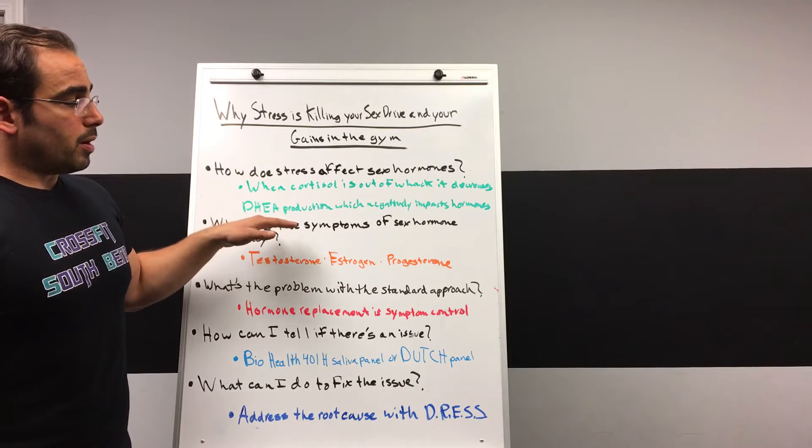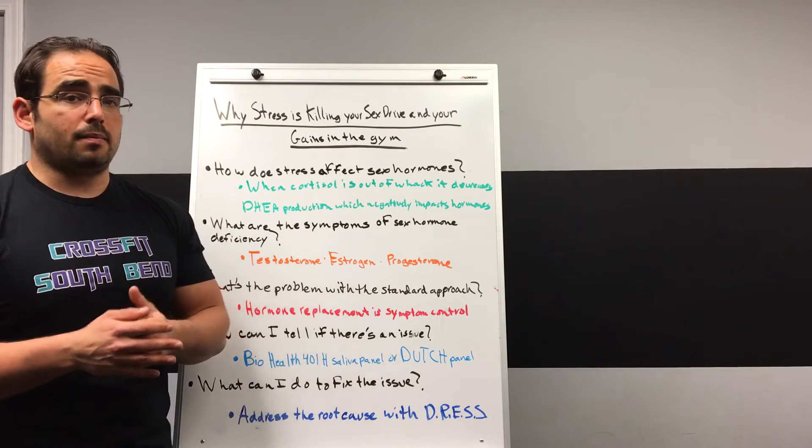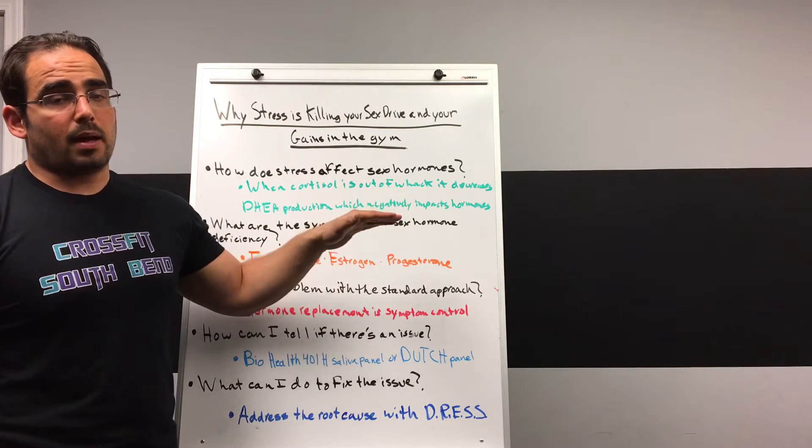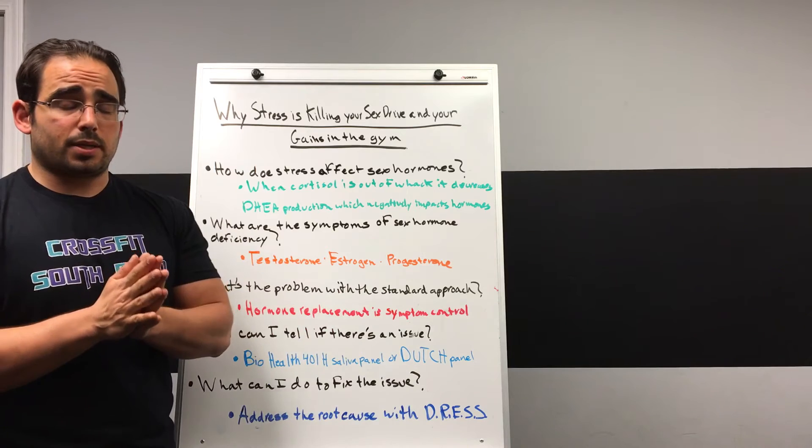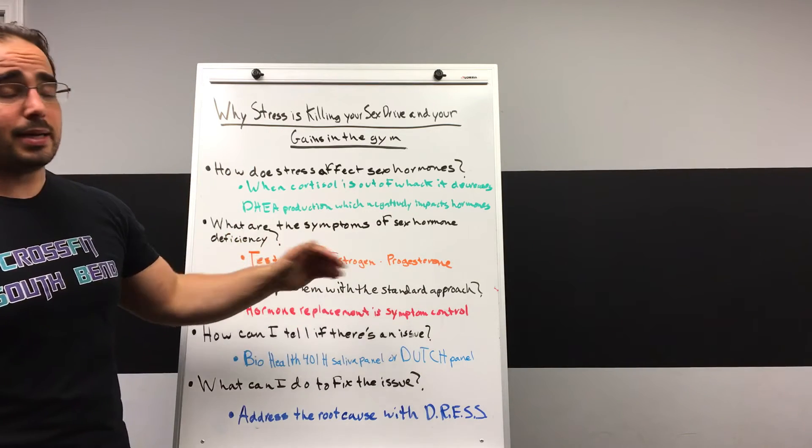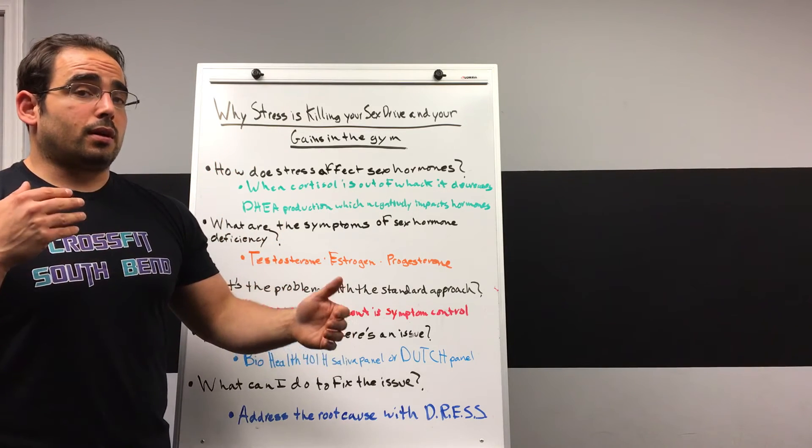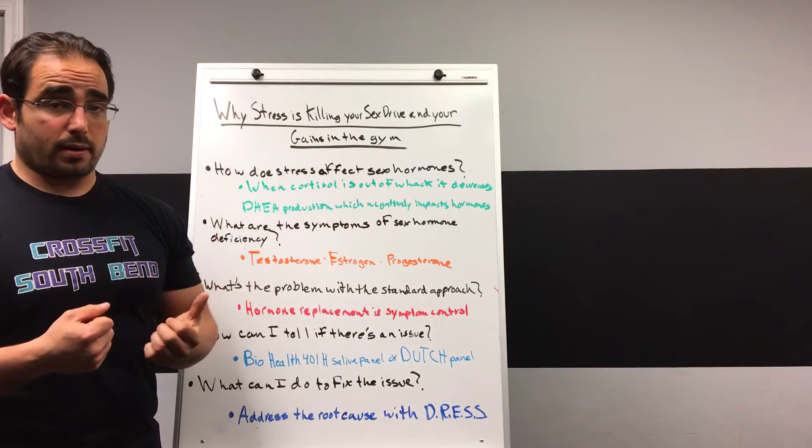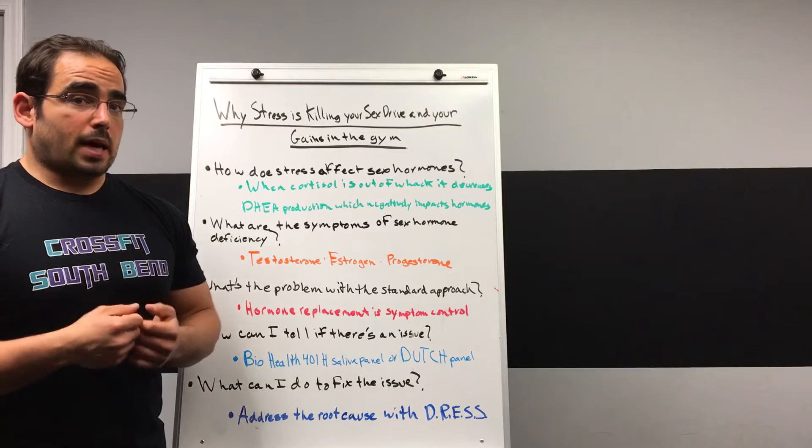The mechanism for testosterone and estrogen being low is typically lowered DHEA production. It could be other things, many other things, but the main one that we're concerned with is lowered DHEA production. Progesterone is actually in a different pathway, but that can be low too. And a lot of the symptoms that you would have with low estrogen, like the ones I just mentioned, the hot flashes and night sweats, can be mimicked with a progesterone deficiency. Another thing to keep in mind is that, especially in women, a lot of what matters is the progesterone to estrogen ratio. If those two numbers, progesterone and estrogen, aren't in the right ratio with one another, then that can also mimic symptoms of low estrogen or low progesterone, so you want to keep that in mind as well.